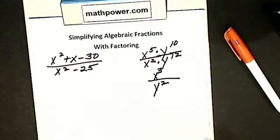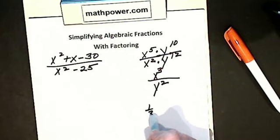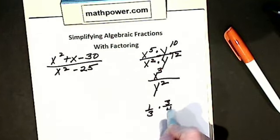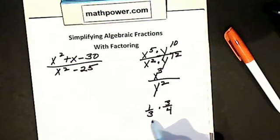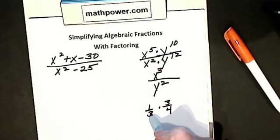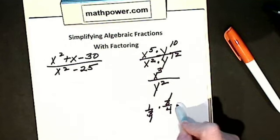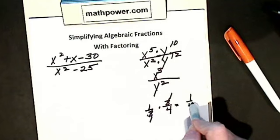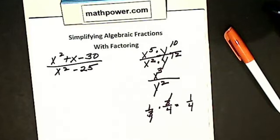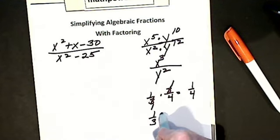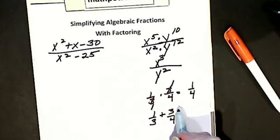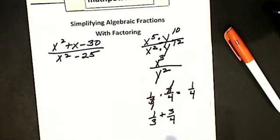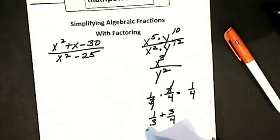Think about fractions. Let's say I have one-third times three-fourths. In multiplication of fractions, I can cancel, because in multiplication the things I multiply are called factors. I can cancel three into three — one, three into three — one. If I multiply across, I get one times one is one, one times four is four. But if I was adding — one-third plus three-fourths — I hope you know I cannot cancel the threes.